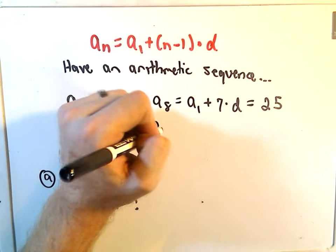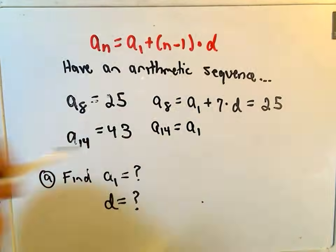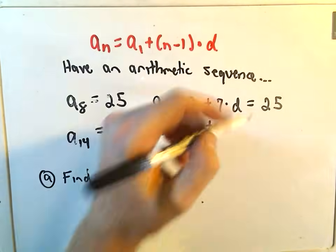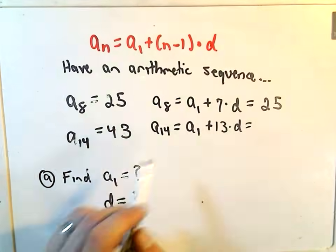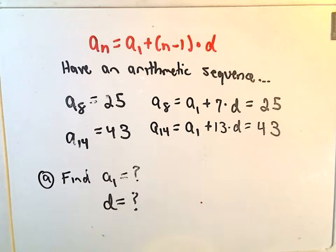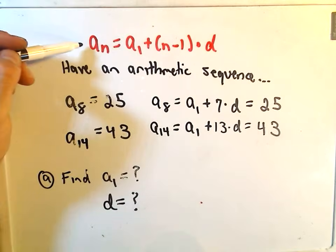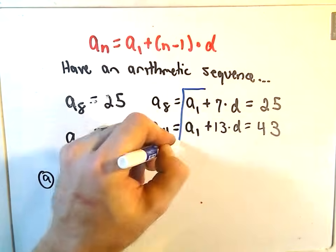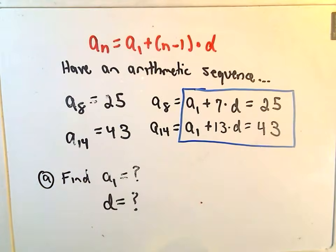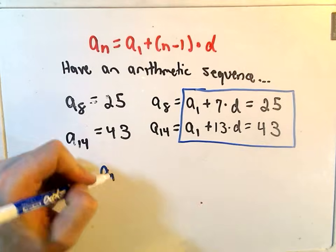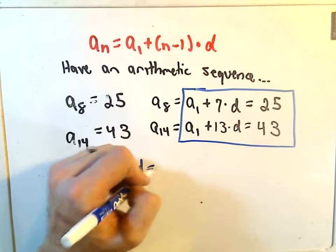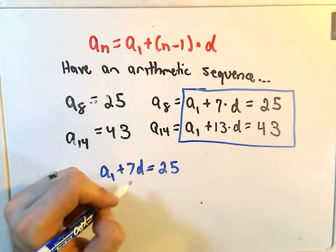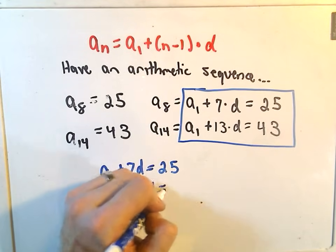Likewise, a_14, if I fill in my formula, it would be the first term. You take 1 less than 14, which is 13, times d. And that's going to equal 43. Okay, so what I've done using my information, and by filling in what I know in this formula, I've created really a little system of equations. Okay, so this is what I'm going to work with now in this problem. So I'm going to write it one more time here. So it says we have a_1 + 7d = 25. We've got a_1 + 13d = 43.